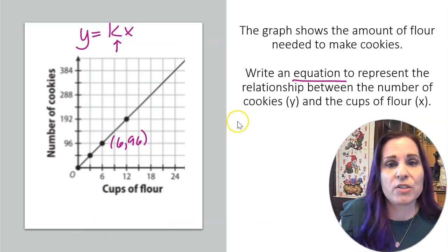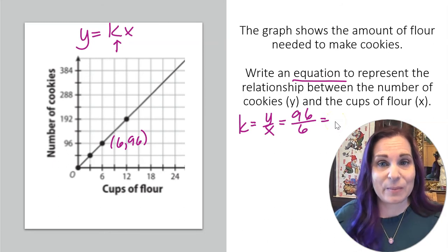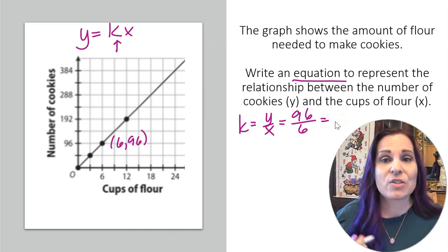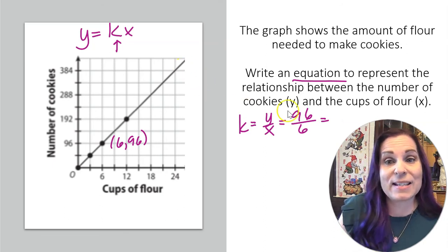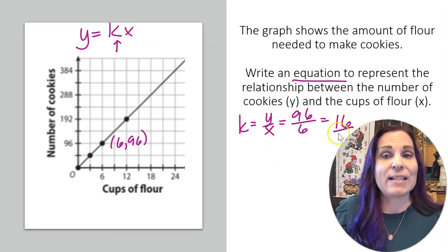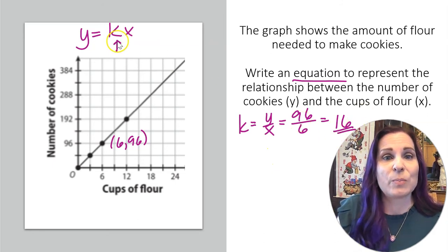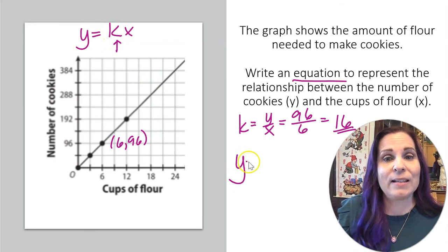So my constant of proportionality is going to be y over x. So that'll be 96 over 6. That's 96 divided by 6. So that's what? 60 and 36. So that would be 16. So now that I know that k is 16, I just put that right here. So y equals 16x.